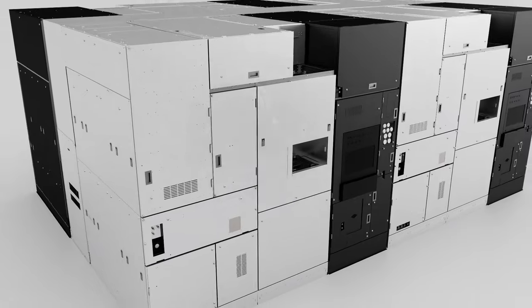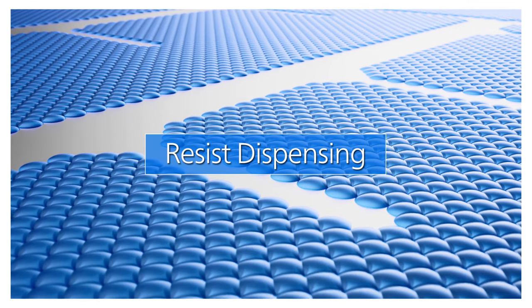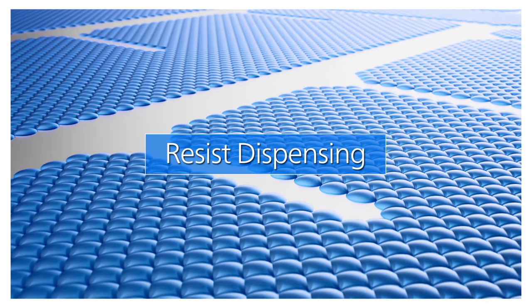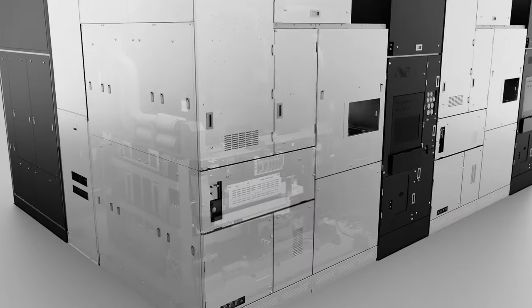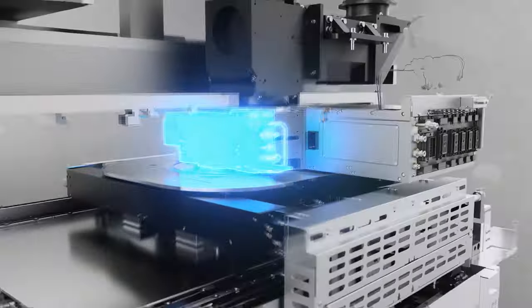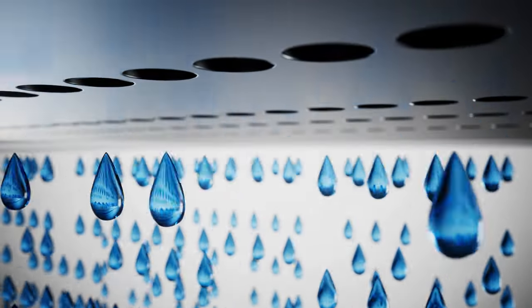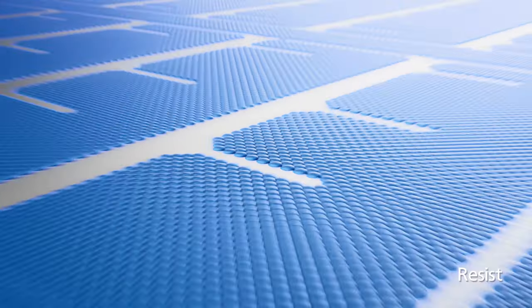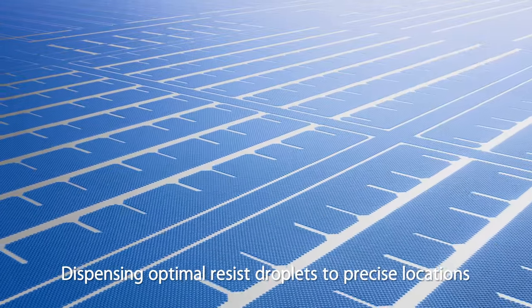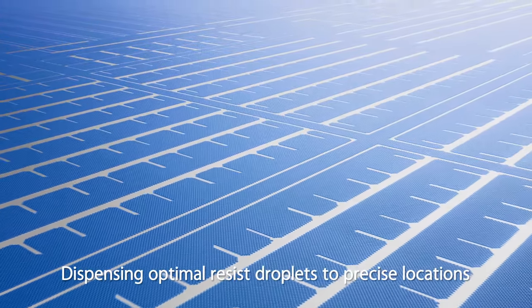The first step in nano-imprint lithography is resist dispensing. Applying ink ejection technology developed by Canon for its inkjet printers, the optimum amount of droplets of resin called resist is applied to precise locations on silicon wafers in order to match the circuit pattern.